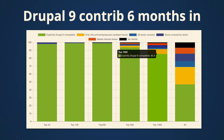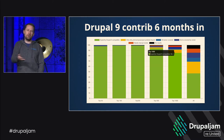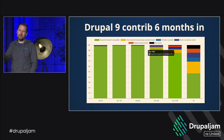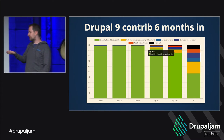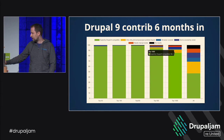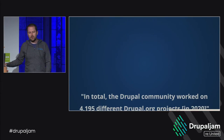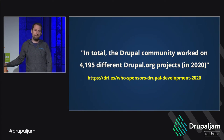You can fix Drupal 8 deprecated APIs without dropping support for Drupal 9. For comparison, six months after Drupal 9 was released, 85% of the top thousand projects were already Drupal 9 compatible. We hope to see a similar number six months after Drupal 10 is released — but this depends on you.